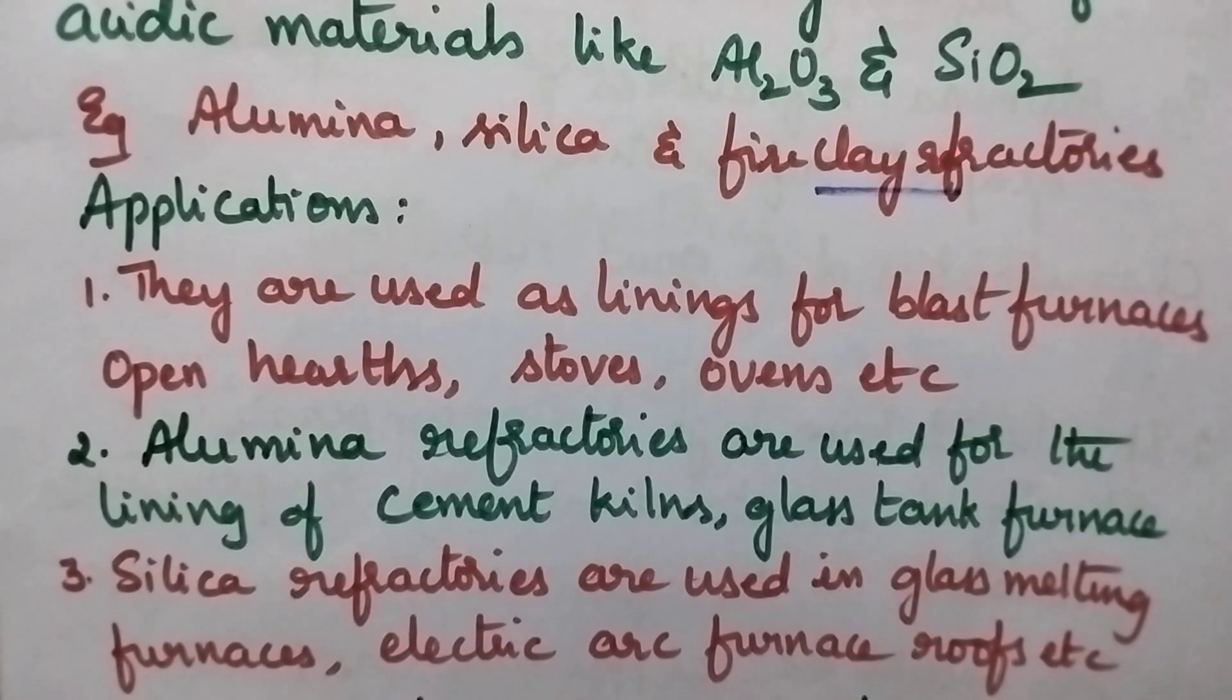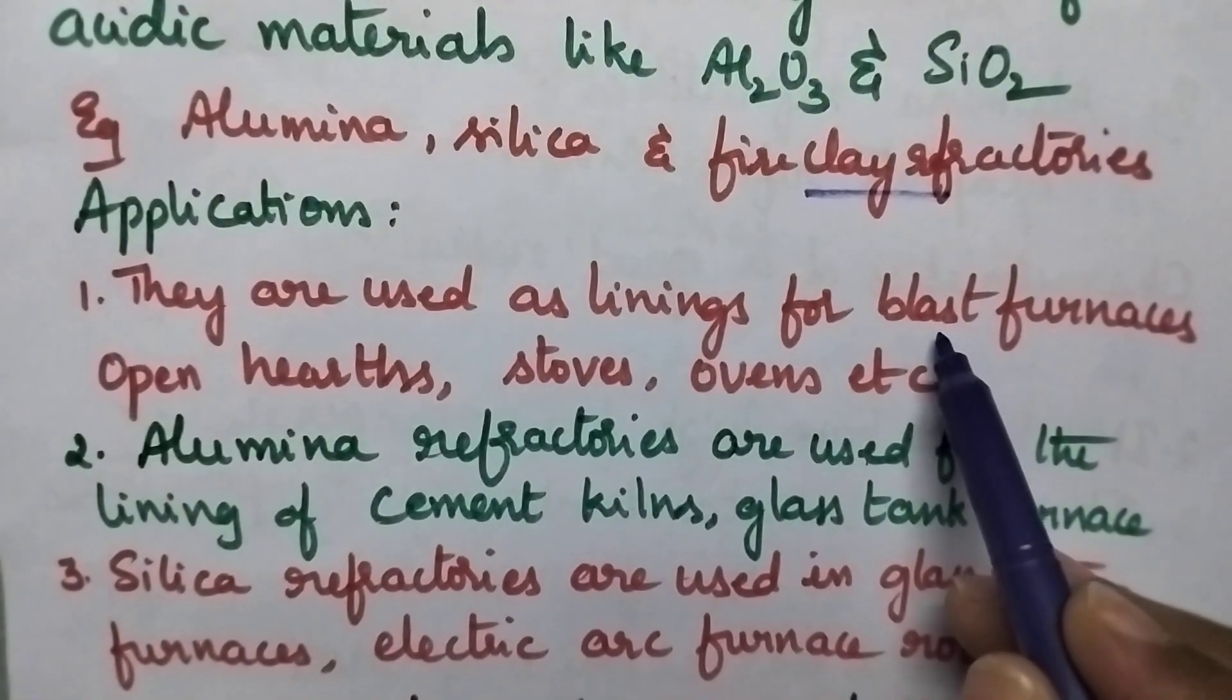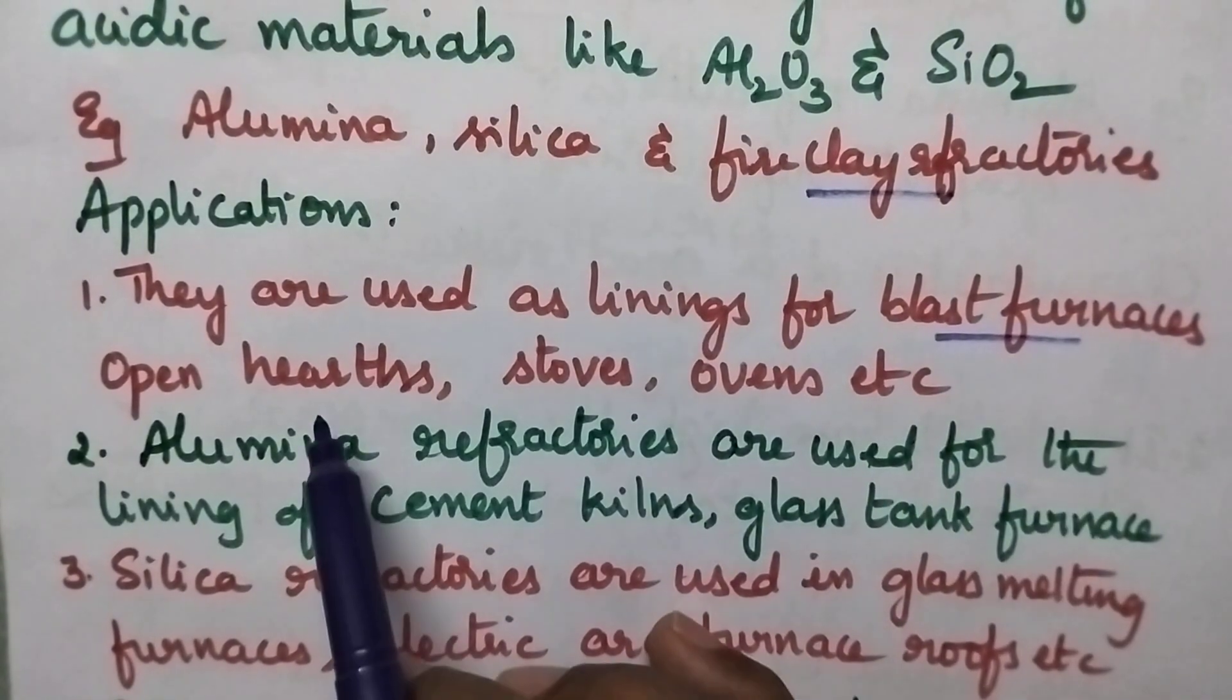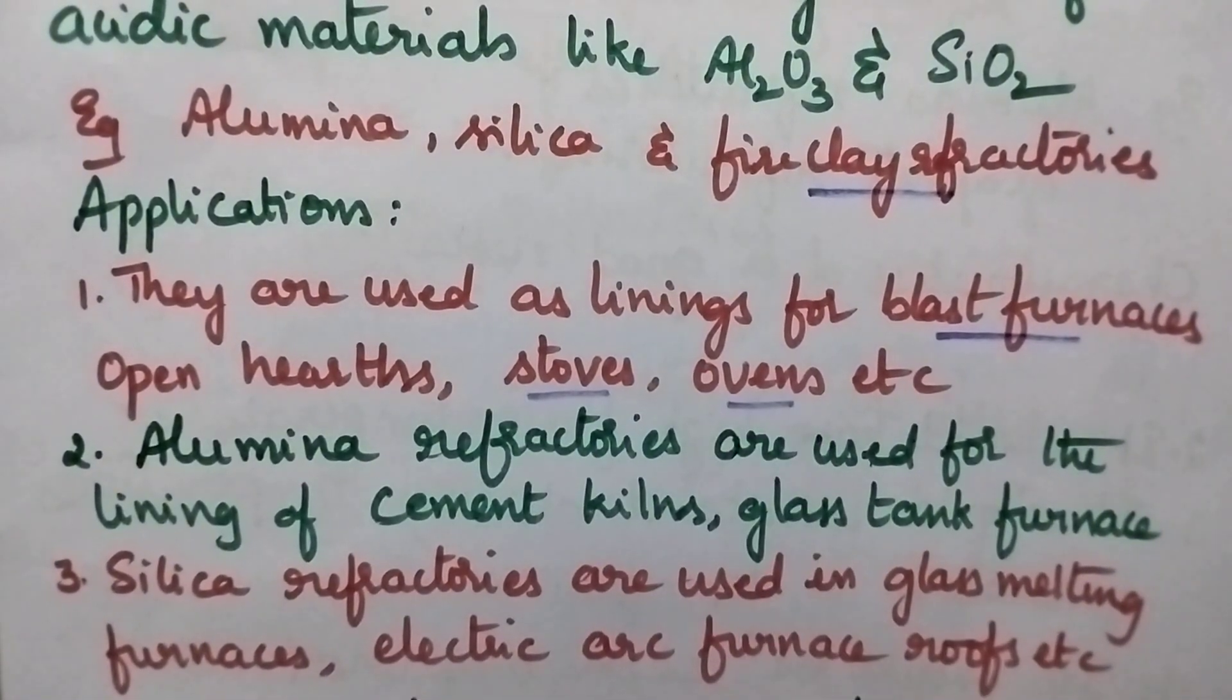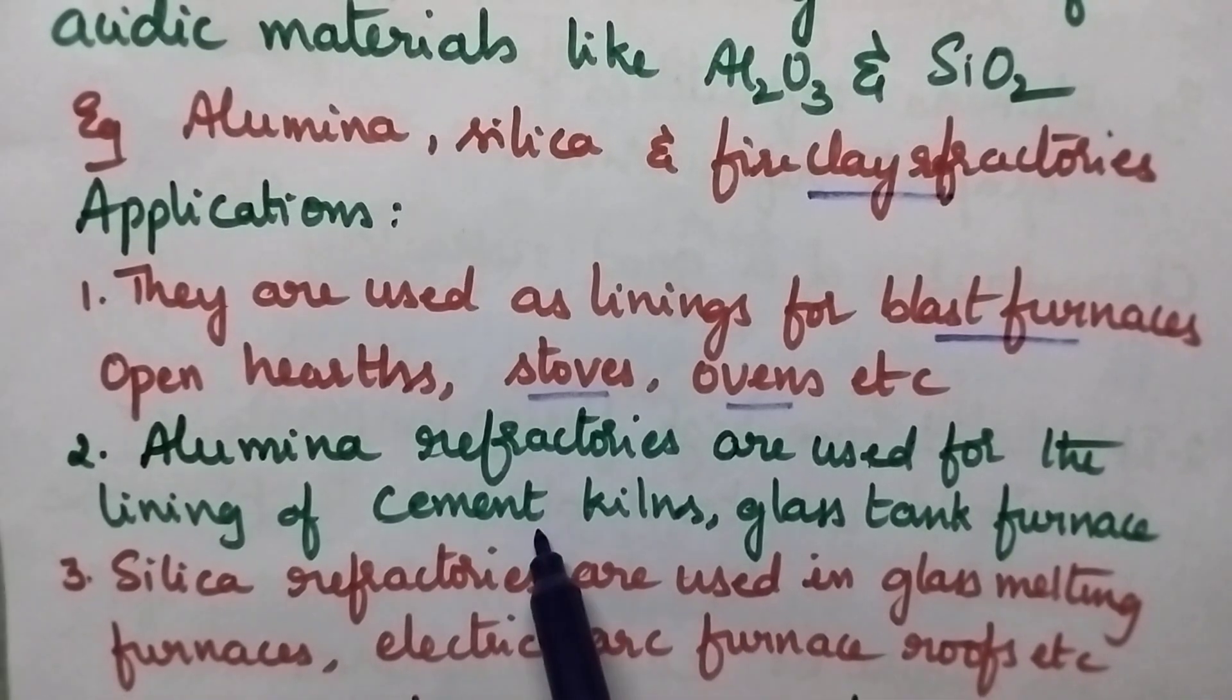Coming to the applications of acidic refractories, they are highly used as linings for blast furnaces, open hearths, stoves, and ovens. Alumina refractories are specifically used for the lining of cement kilns.